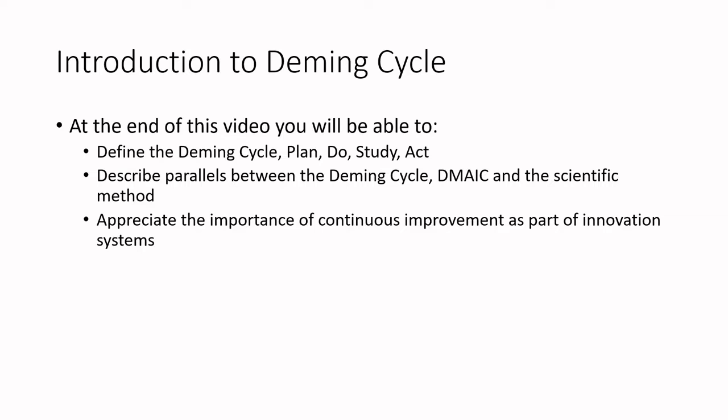At the end of this video you will be able to define the Deming cycle as the Plan Do Study Act cycle. You may have heard of it as the Plan Do Check Act cycle — that's quite common terminology — however W. Edwards Deming actually called it the Plan Do Study Act cycle. We'll also briefly describe the parallels between the Deming cycle and the scientific method, and we'll appreciate the importance of continuous improvement as part of innovation systems, particularly with respect to food processing.